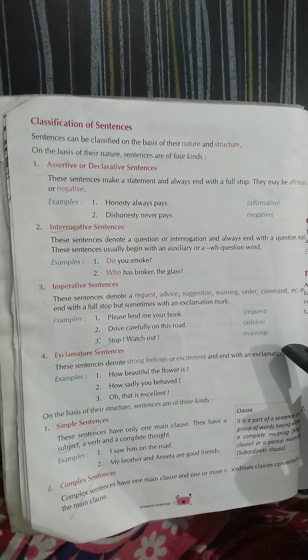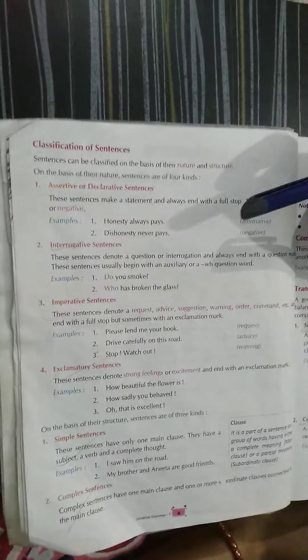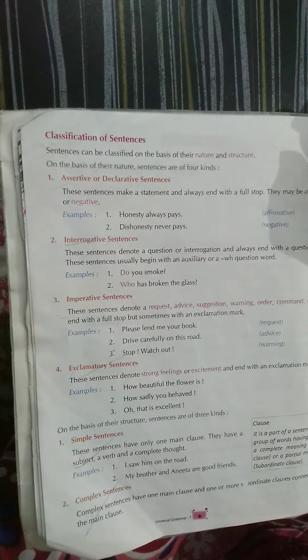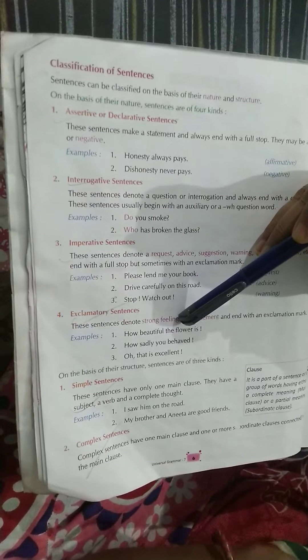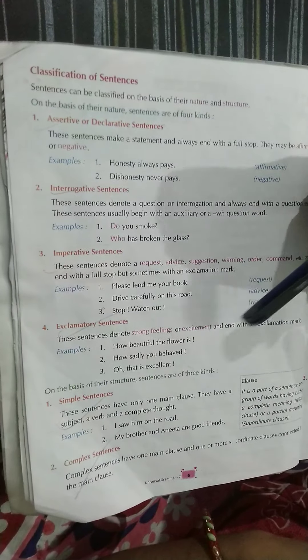Now we are coming to the exclamatory sentences. What are the exclamatory sentences? Exclamatory sentences denote some strong feeling of excitement or sadness — anything. The exclamatory sentences express a strong feeling of excitement or sadness and end with an exclamation mark.